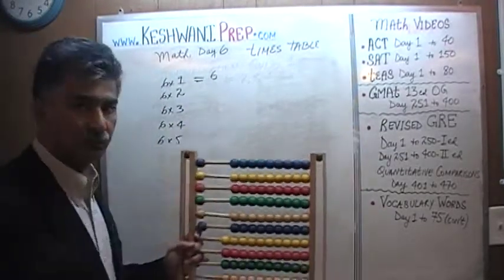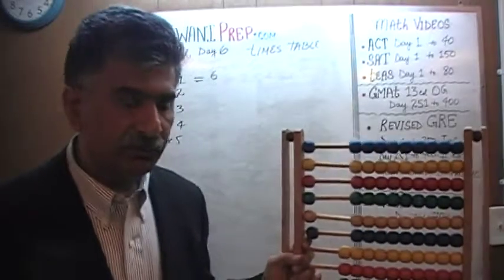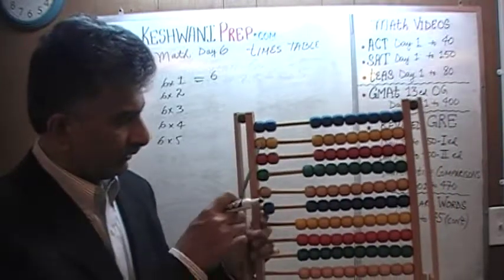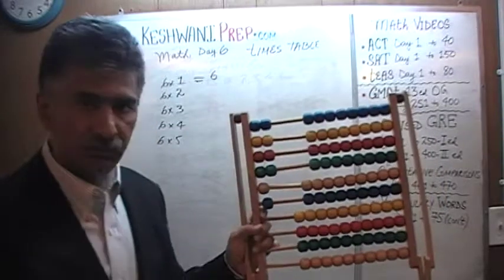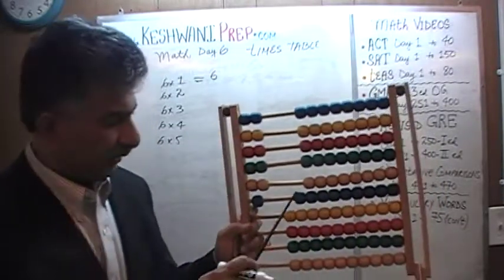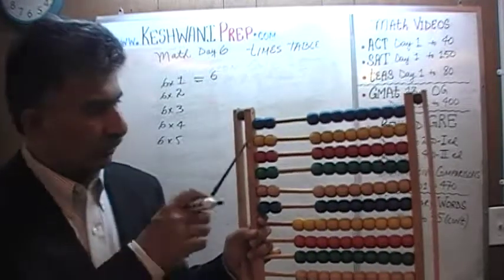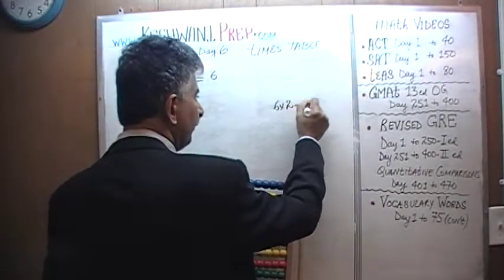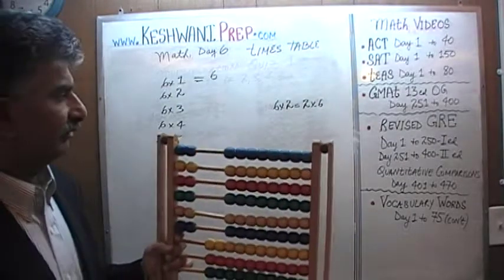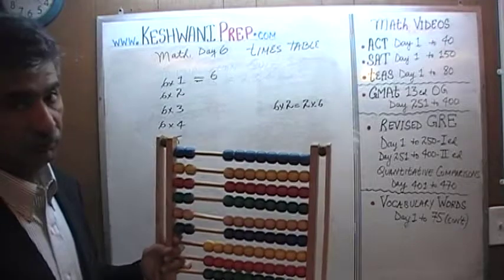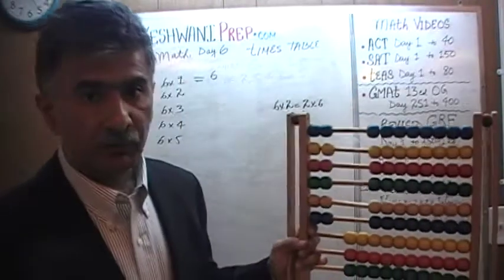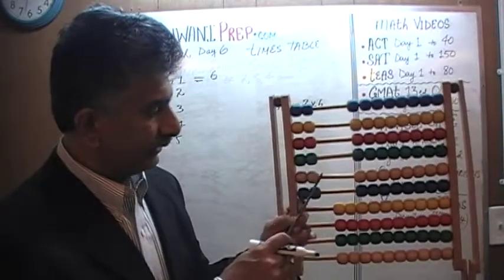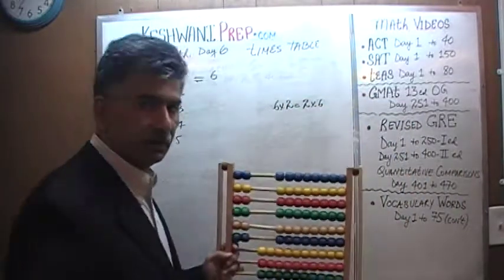Now we have six twos. We need six groups of two each. Each group should have two. First group, second group — now we have two twos, three twos, four twos, five twos, and finally six twos. Six twos are the same as two sixes. We learned our table of twos, so we just count by twos: two, four, six, eight, ten, and twelve. Six twos, which is the same as two times six, is twelve.